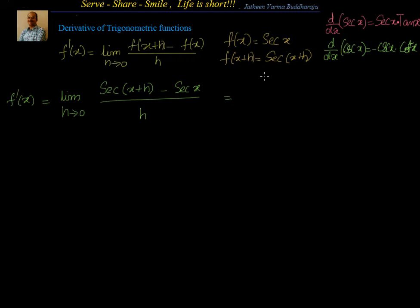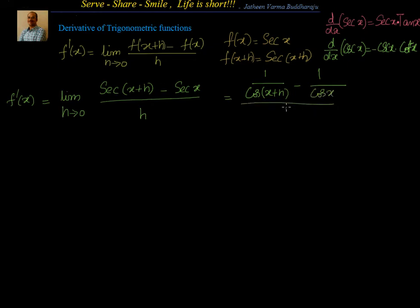What I will do is convert secant into 1 by cos. Always converting into sin and cos will help us easily solve because we have a lot of formulas available to simplify. So I will convert that as 1 by cos of x plus h minus 1 by cos of x, divided by h, limit h tends to 0.